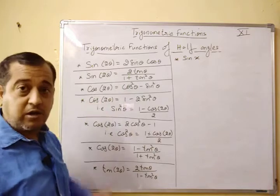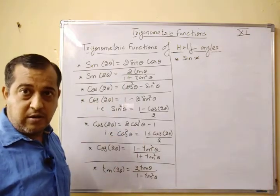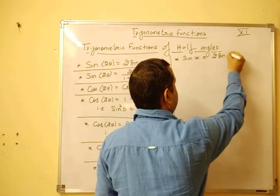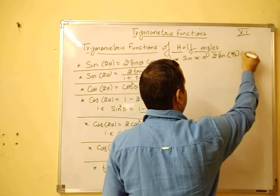Now see, angle half ho gaya, yahan kia da 2 theta, aadha ho gaya, x. So what we get, we get 2 sin x by 2 cos x by 2.